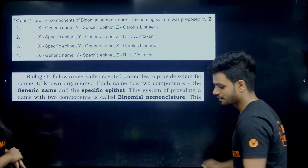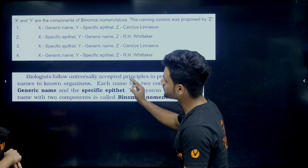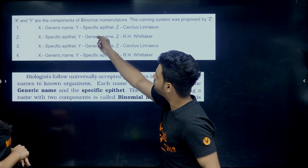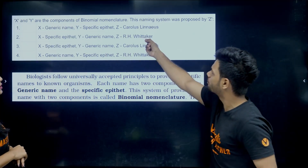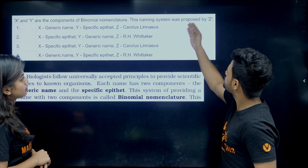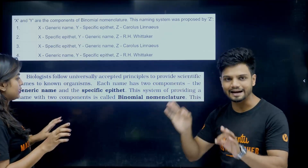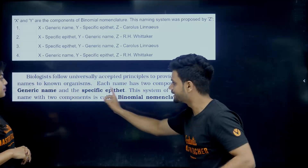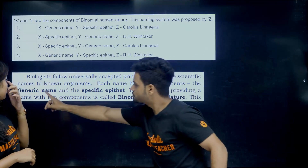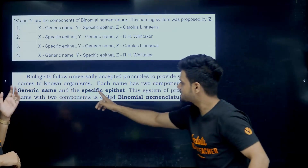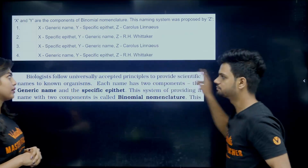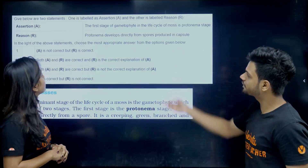The first question: X and Y are the components of binomial nomenclature. The naming system was proposed by — direct line from NCERT, bold letters. Can you see? Generic name and species epithet — answer number one.